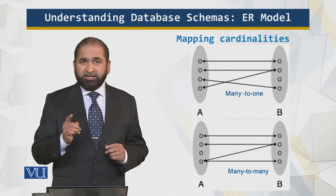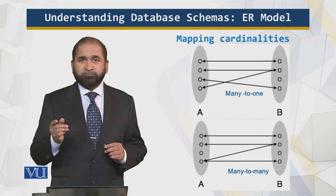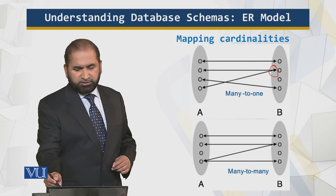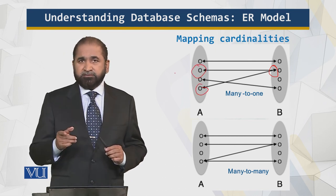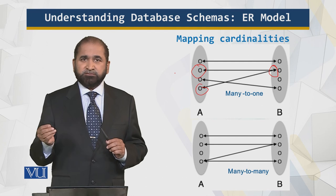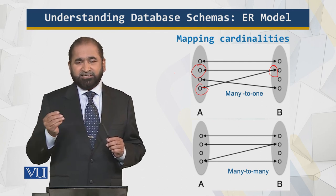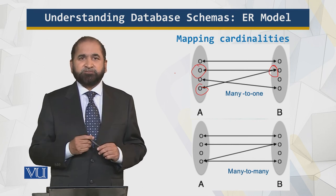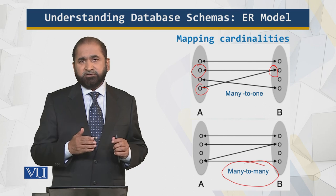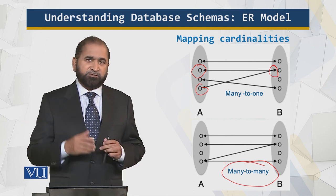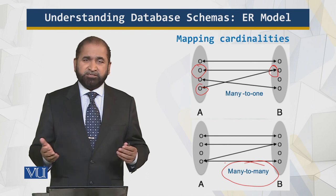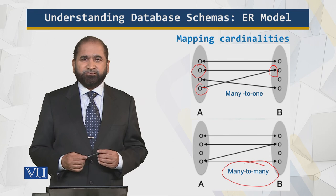Many-to-one is slightly different: a state can be in one region, a city can be in one province — there are many provinces, but a city cannot be in multiple provinces at the same time. Finally, the many-to-many relationship: a doctor can have many patients and a patient can have many doctors. We'll use these as a basis for developing the ER modeling diagram in the corresponding module. That's all for this module, thank you.